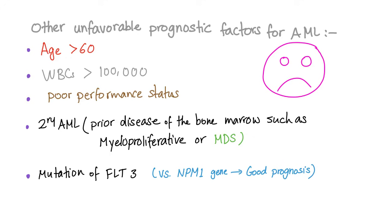Unfavorable prognosticators of AML: age greater than 60, white blood cell count greater than 100,000, poor performance status, secondary AML — meaning AML arising from a prior disease — which carries much poorer prognosis than de novo AML. Also, mutation of FLT3 confers poor prognosis.